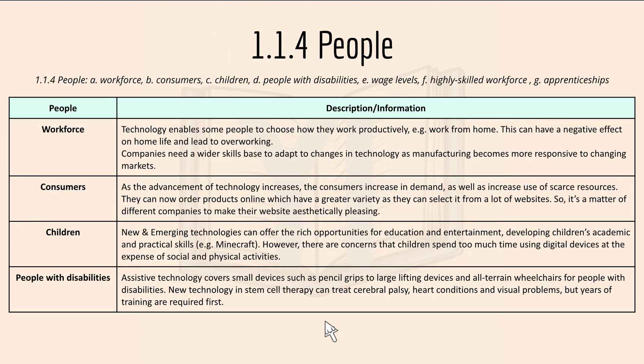Then we have 1.1.4 people. This covers workforce, consumers, children, people with disabilities, wage levels, highly skilled workforce, and apprenticeships.